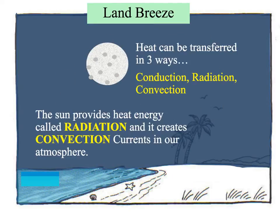Let's do a quick recap. Heat is transferred by way of conduction, radiation, and convection. The sun provides heat energy called radiation — it comes down and heats the land. The air touches the ground, and this touching is called conduction. Then as the air molecules circulate around as they rise and fall, that's convection.